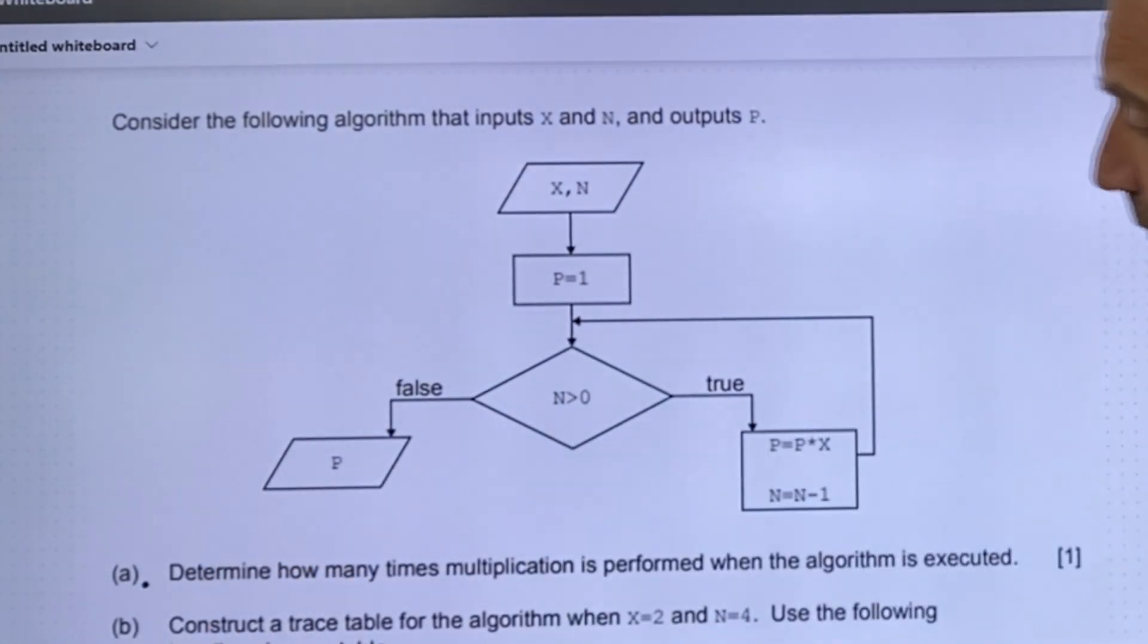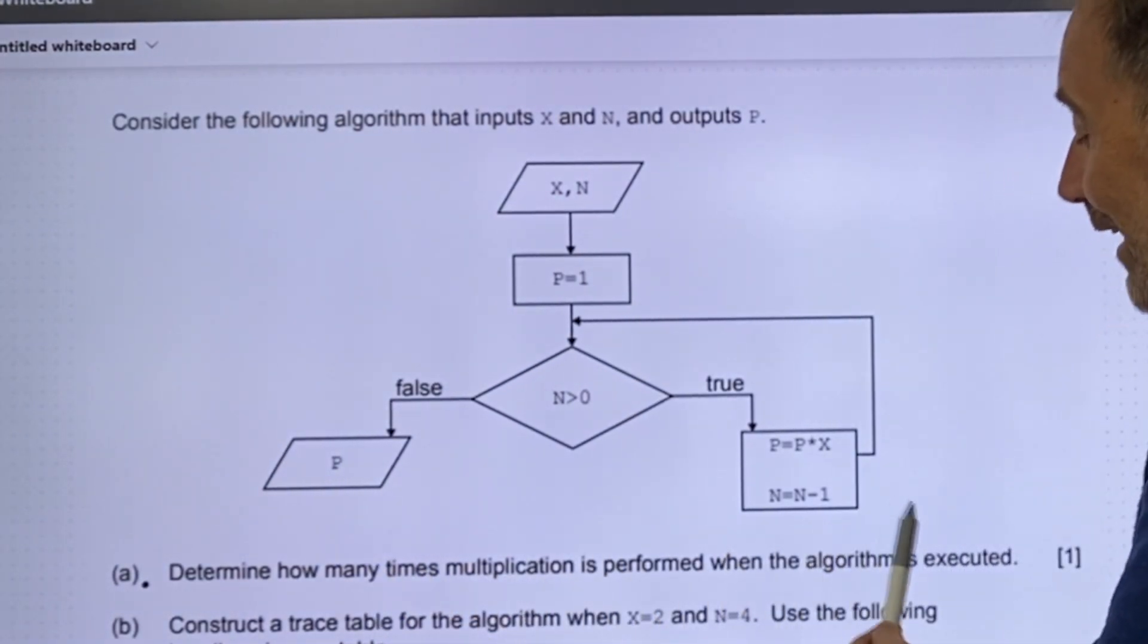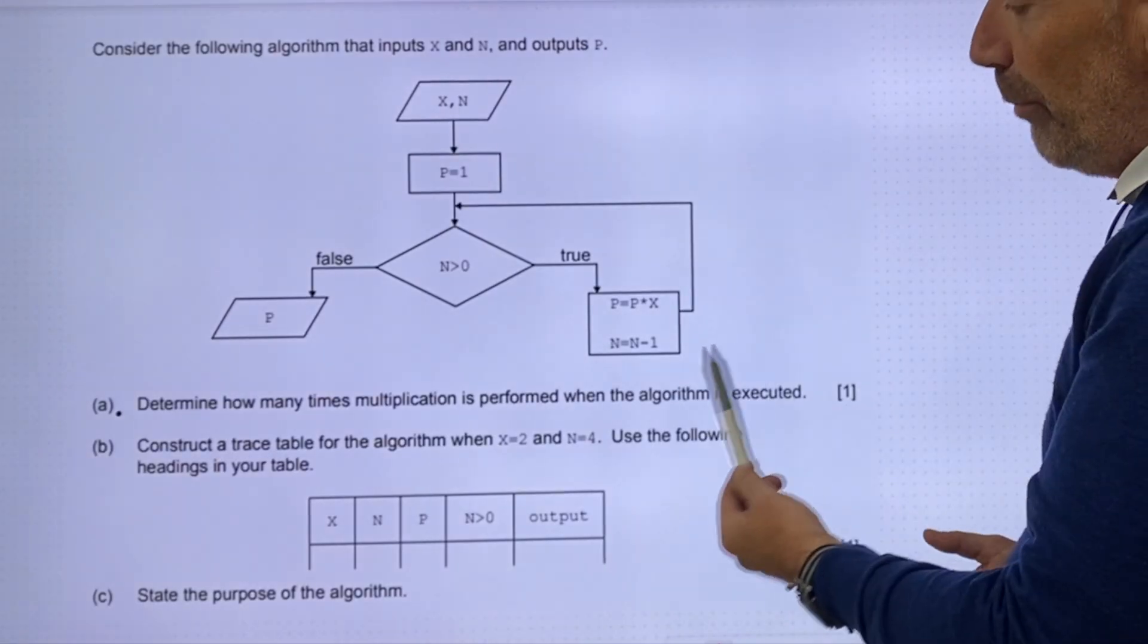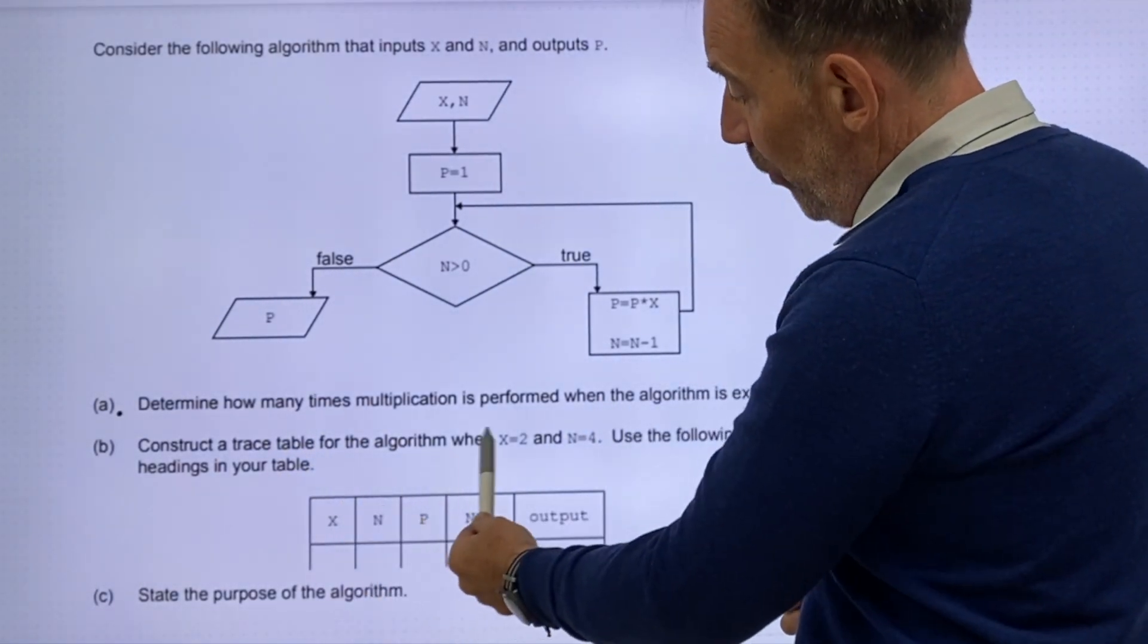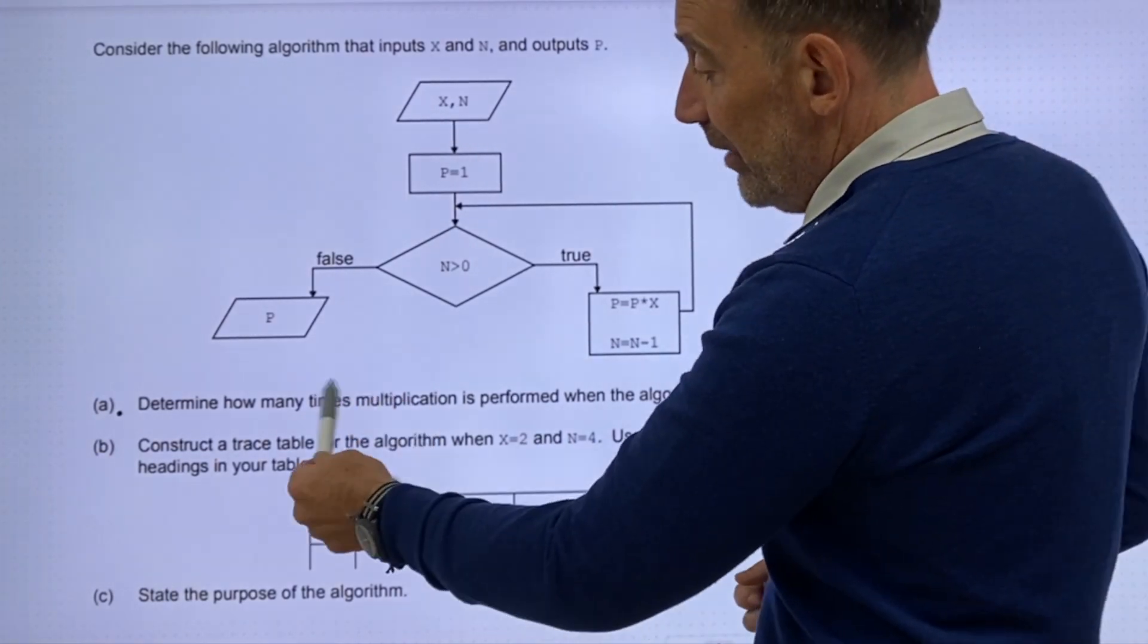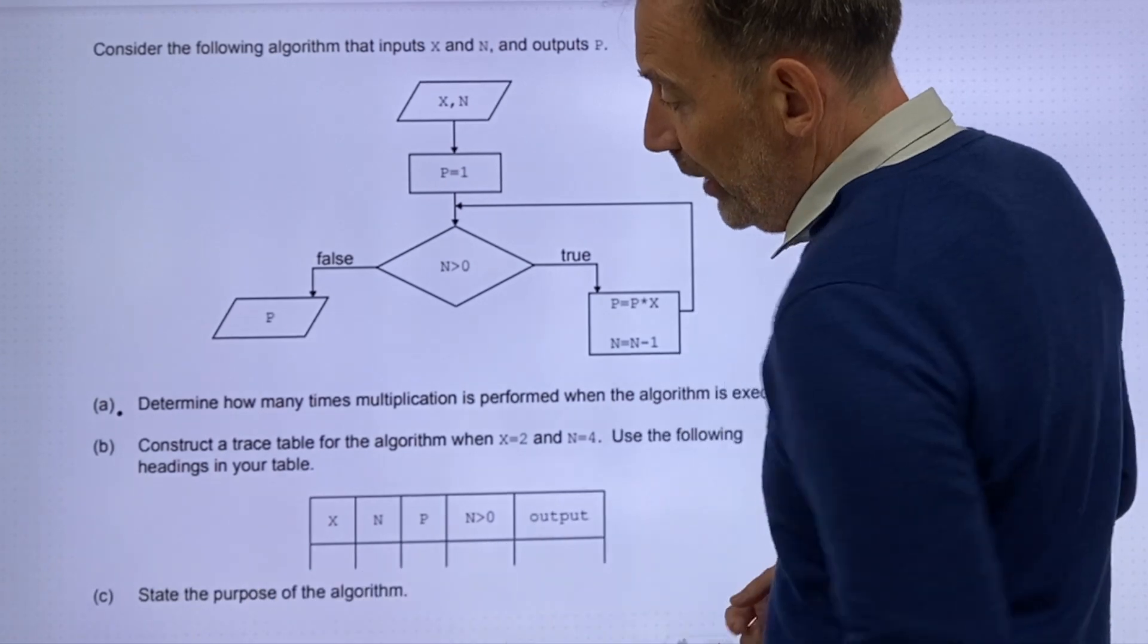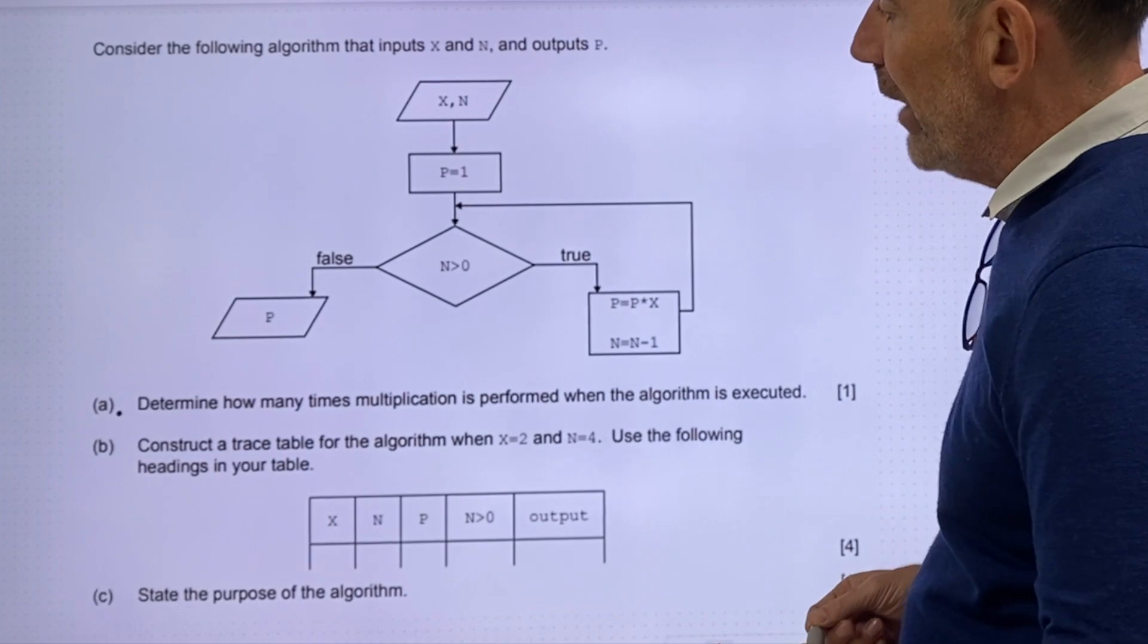Multiplication in here, n equals n minus one. So that's dropping down. And that returns true. It's going to return true until n is basically zero. Then it will return false and it will output p. For part A, determine how many times multiplication is performed when the algorithm is executed.